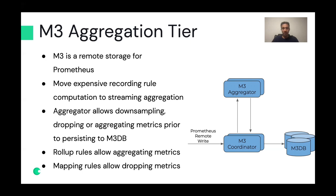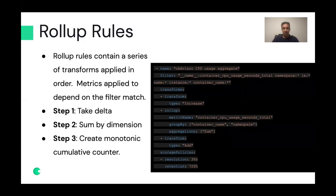The aggregation tier allows two types of aggregations. First, roll-up rules, which allow you to aggregate across metrics and apply functions like sum, max, etc. Second, mapping rules, which for the purpose of this talk we'll describe as having the ability to drop metrics. Roll-up rules contain a series of transforms applied in order — the metrics that roll-up rules get applied on depend on a filter match. Roll-up rules have three different steps: first, take a delta; second, sum by the dimensions you're interested in; and third, create a monotonic cumulative counter.